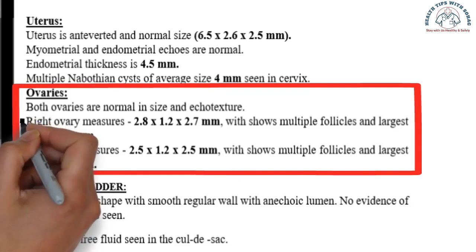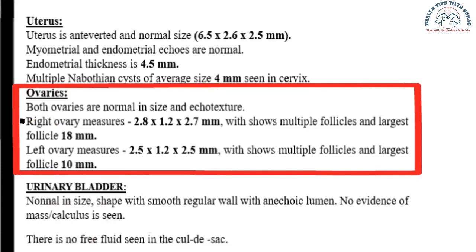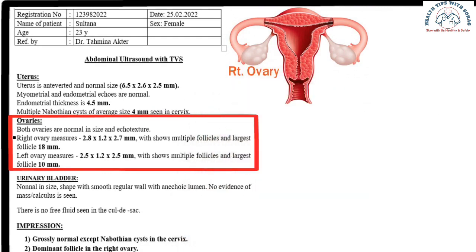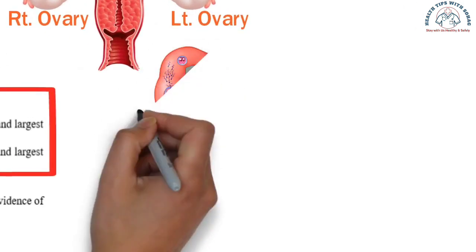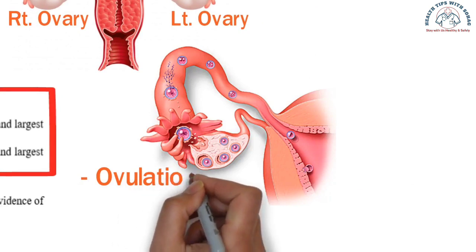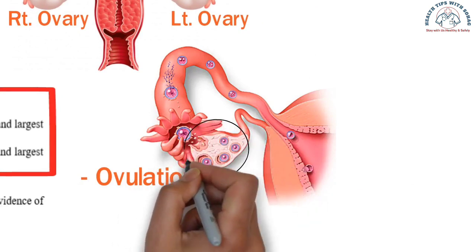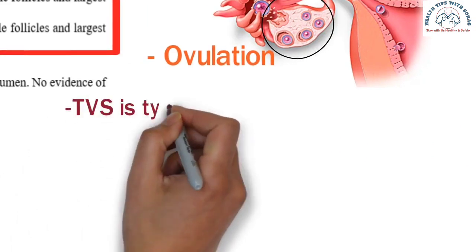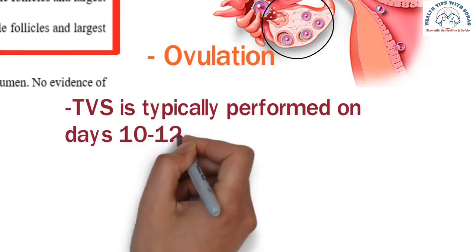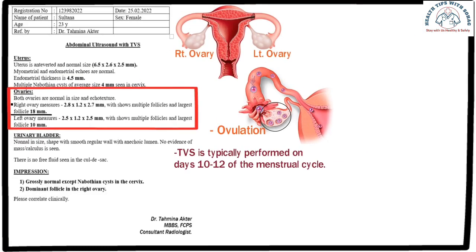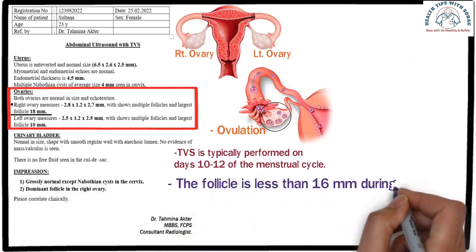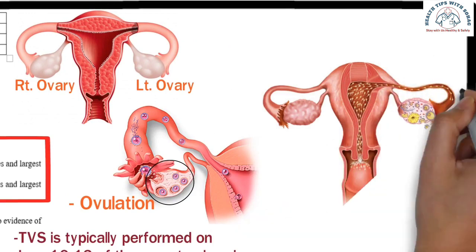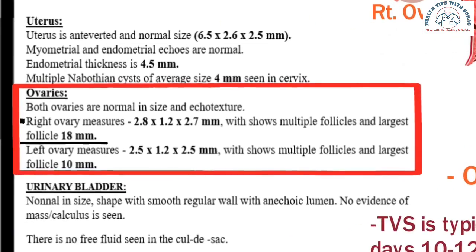The report states that the right ovary shows multiple follicles and a large follicle measuring 18 mm, which is very important. Small follicles are present in the ovaries, which grow and undergo ovulation during a certain time of the menstrual cycle. Ovulation is necessary for conceiving a baby, and it is important that the follicles are of the correct size. Trans-vaginal ultrasound is typically performed on days 10–12 of the menstrual cycle to determine follicle size. If the follicle size is less than 16 mm during this time, it is considered unsuitable for conception. If the follicle size is 18 mm or larger, ovulation can occur, and conception is possible if intercourse takes place at this time.